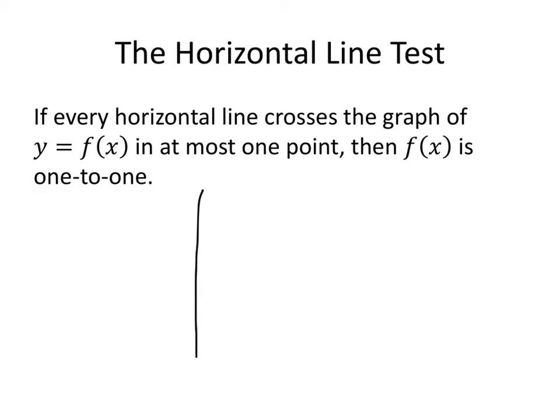So again, just to give you an example, here's my x-axis. I'll draw something like this. So here's a function. Don't exactly know what the formula for that function is. But what I can tell is that any horizontal line that I draw is never going to cross the graph of my function more than once. So that means that this function is one-to-one.